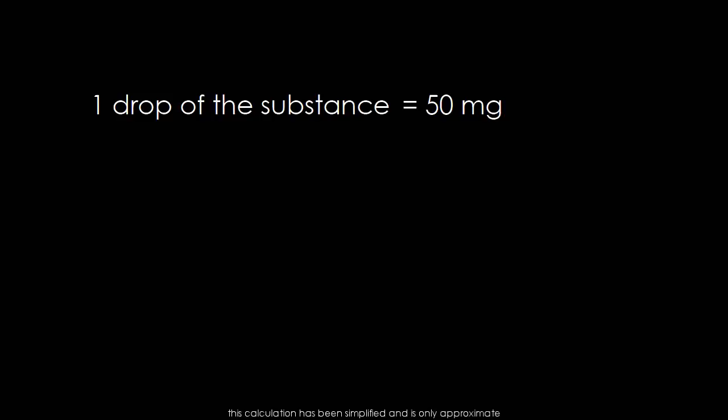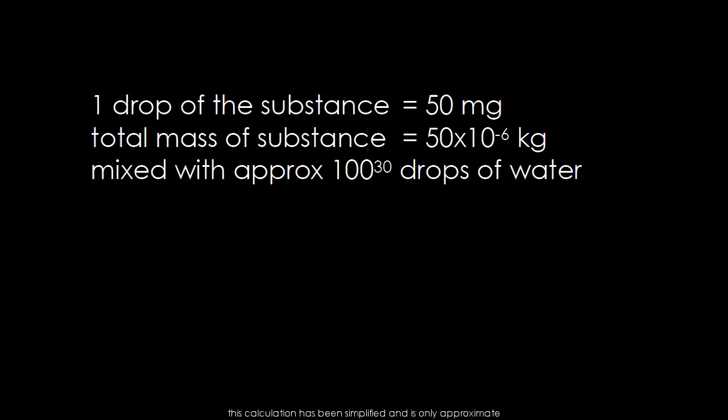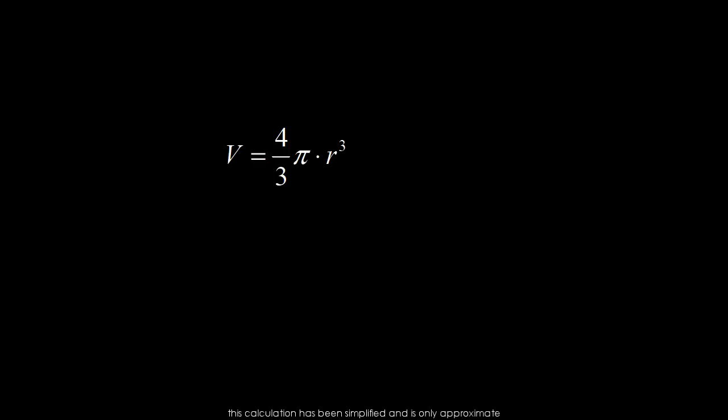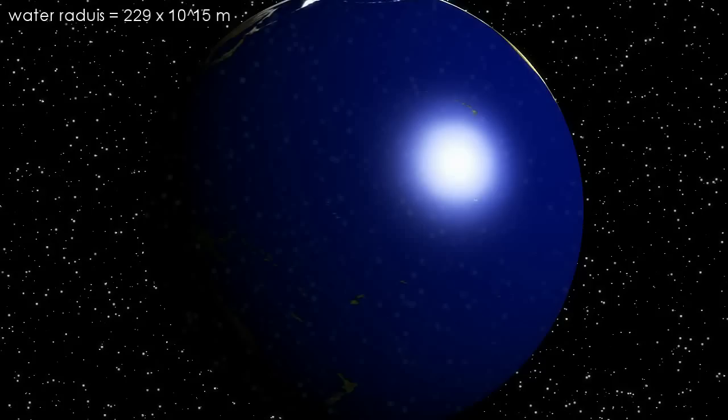To get an idea of the final dilution of a 30C solution, take one drop of the substance and mix it with 100 to the power of 30 drops of water. For simplicity, let's assume that the density of the water in the resulting sphere is constant at 1000 kilograms per cubic meter. Therefore, you would need 50 by 10 to the power of 51 cubic meters to fit all that water in. This is the formula for the volume of a sphere, so the water would fit in a sphere of radius 229 by 10 to the power of 15 meters.